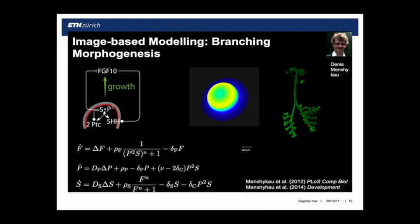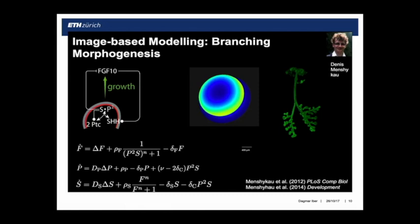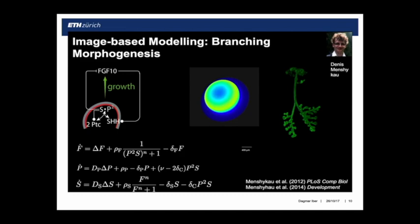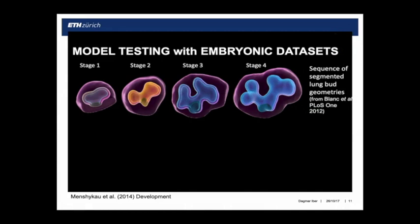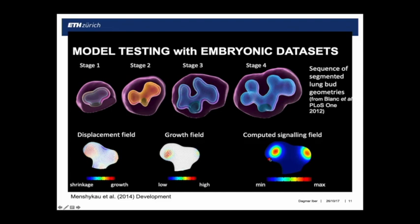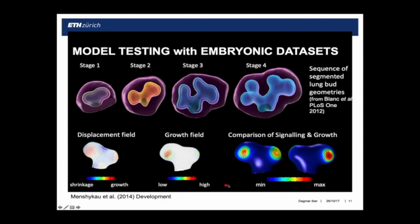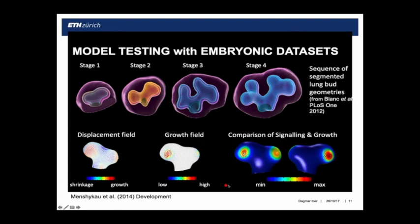We translated the biochemistry people had figured out about those pathways into a set of partial differential equations — a reaction-diffusion term — and solved that on a domain. In red is FGF10 signaling. We have a normal vector field as a growth field so it's growing everywhere, but the strength of growth is proportional to FGF10 signaling, and you can see that this supports branching. The question was could that really be the mechanism? It's one thing to get it in simulation but is that what's happening in vivo?